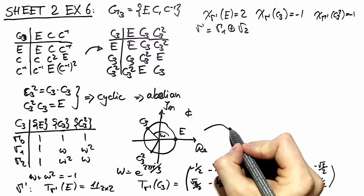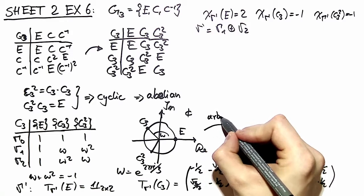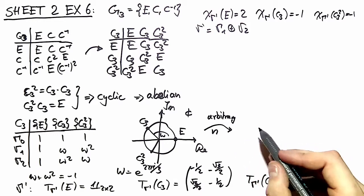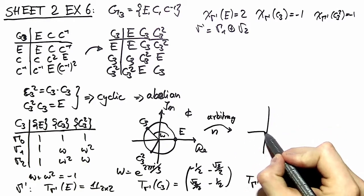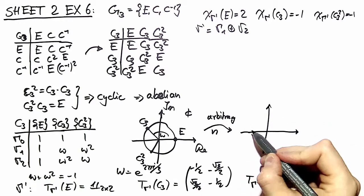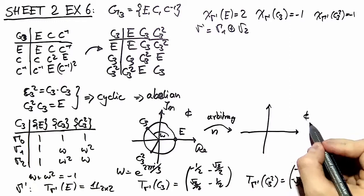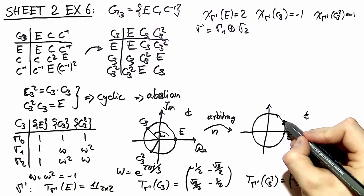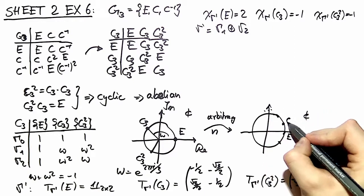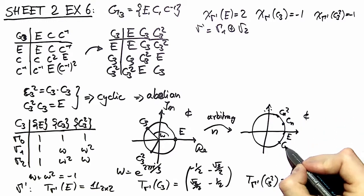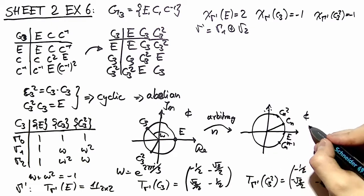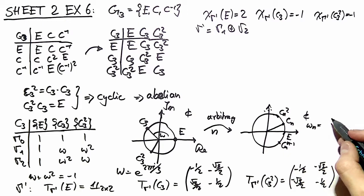The next thing we want to do is generalize this for arbitrary n. We want to generalize our result for a group Cn, which contains n-fold rotations around a single axis. Again, using our complex plane with the unit circle, we have our identity element, and now we have Cn elements sitting at Cn, Cn squared, up to Cn to the n minus 1. Looking at this angle, we can see that omega_n is equal to e to the 2πi over n.